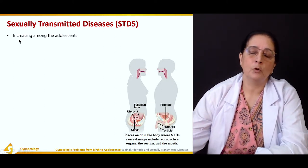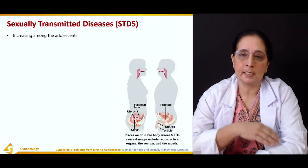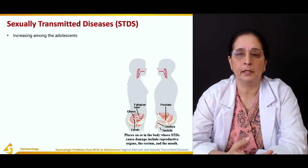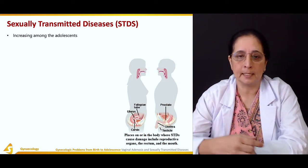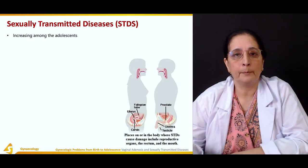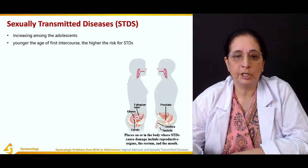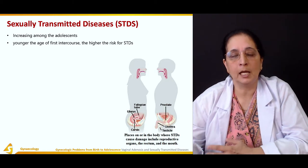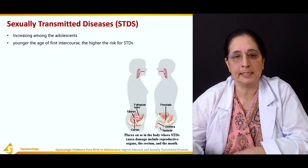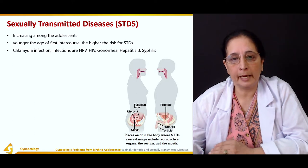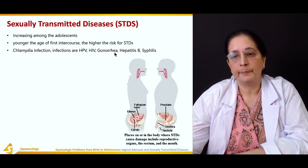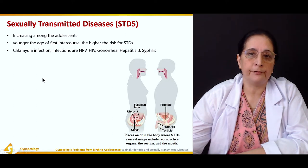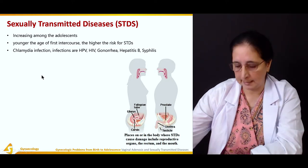There is an increasing amount of STDs in adolescents, especially with unprotected sex or early age of sexual activity. Younger the age of first intercourse, the higher the risk of STDs. Common STDs include chlamydia, HPV (human papilloma virus), HIV, gonorrhea, hepatitis B, and syphilis.